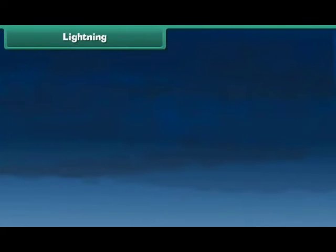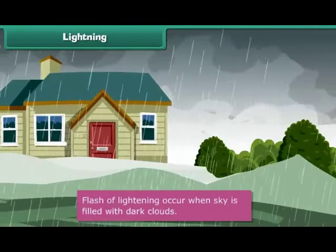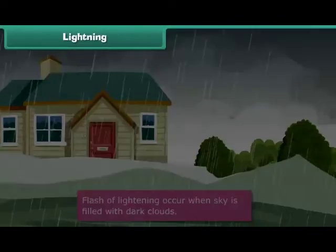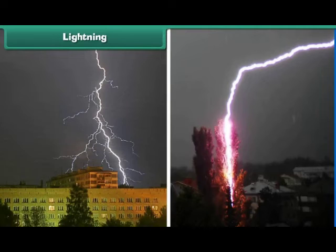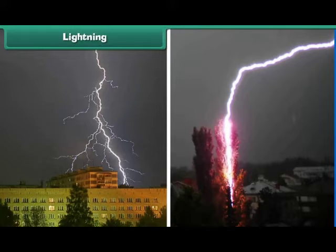During the rainy season, when the sky is filled with dark clouds, we see a flash of lightning in the sky. The lightning may strike buildings, trees, or a field. When lightning strikes, the existing things at that place burn. Sometimes animals and even people die due to lightning.